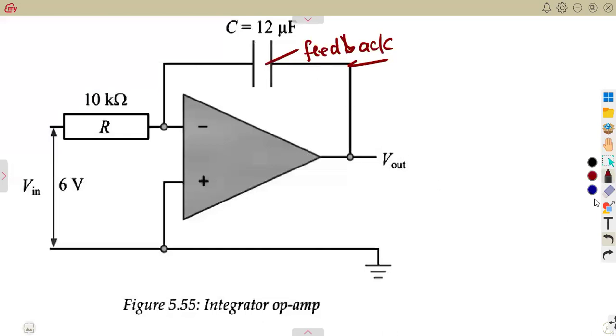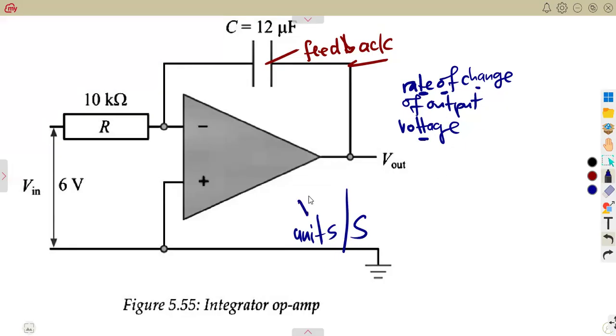So on the integrator op-amp, what are they going to ask you? Mostly, it is the output voltage. But this now is referred to as the rate of change. This time is referred to as the rate of change of output voltage. Rate of change from our mathematics, whenever we get this rate of change, it means that it's going to be the units of whatever that is changing per unit time, meaning per second. So it's the rate of change of the output voltage, measured in volts per second.